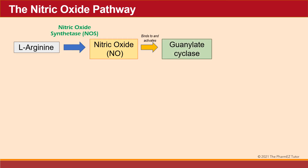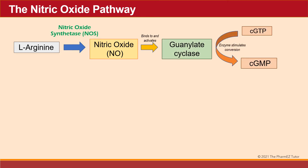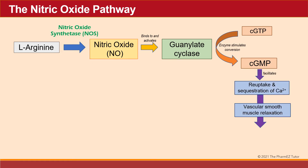Nitric oxide then binds to and activates guanylate cyclase, which is an enzyme that stimulates conversion of cyclic GMP. Cyclic GMP then facilitates reuptake and sequestration of calcium, resulting in vascular smooth muscle relaxation and vasodilation.